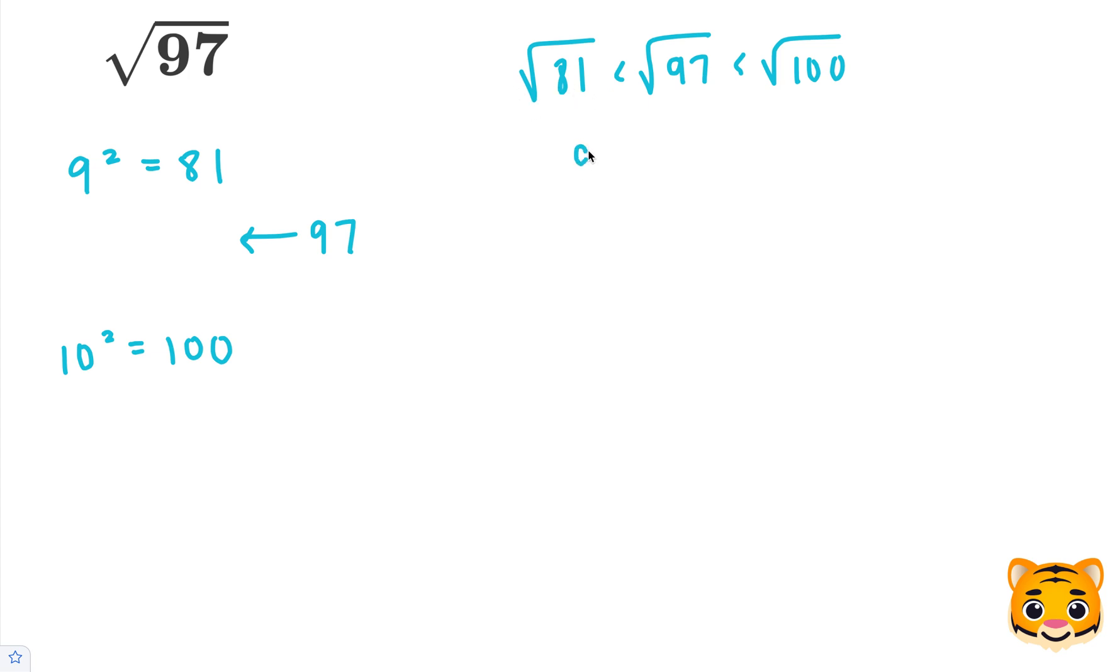Now, let's rewrite the square root of 81 as 9, because 9 squared is 81. We can rewrite the square root of 100 as 10, because 10 squared is 100.